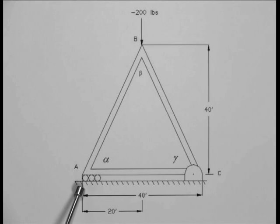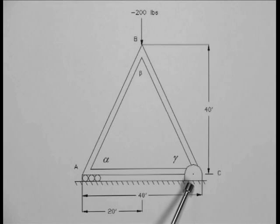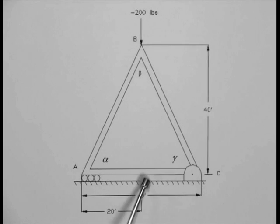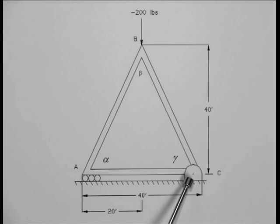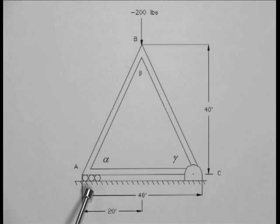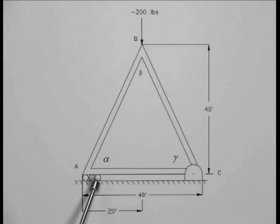It is also worth noting that we have a pin occurring at point C. This pin constrains the truss, preventing it from moving in either the vertical direction or the horizontal direction. At the bottom corner, underneath the A joint, we have a set of rollers. These rollers constrain the movement of the truss vertically, but do not constrain it horizontally.